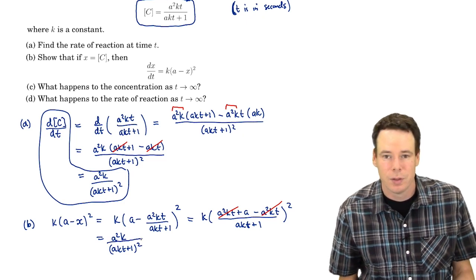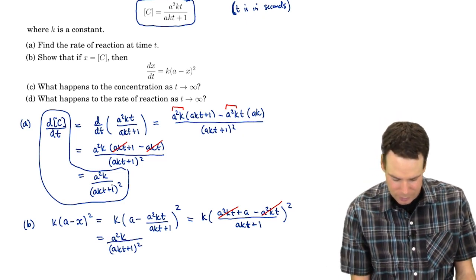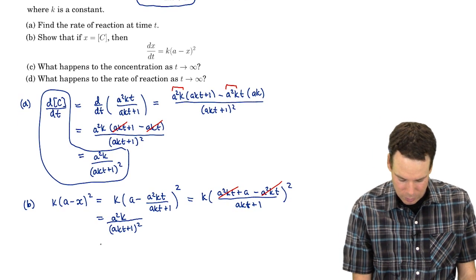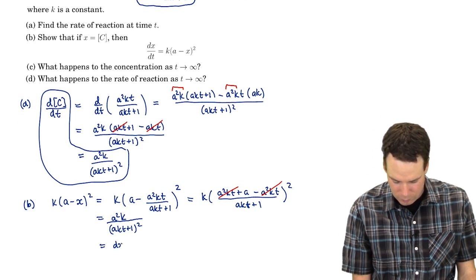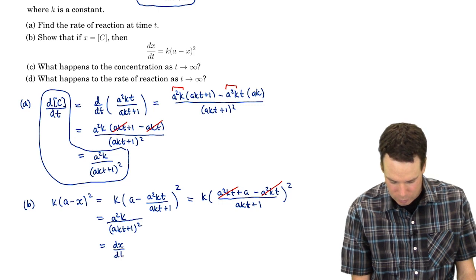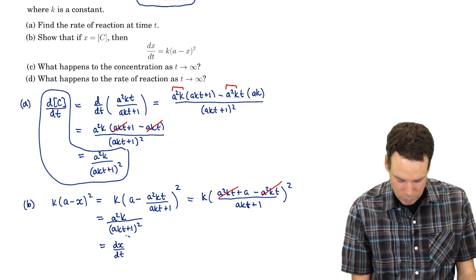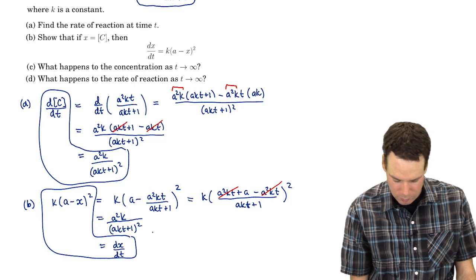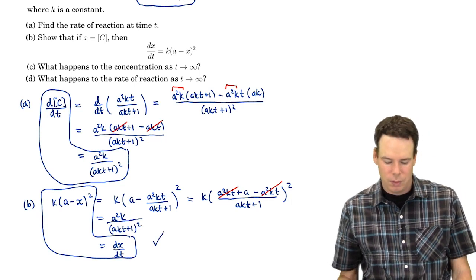I get some cancellations happening here. And so what we get is an a squared k on top and an akt plus 1 all squared on the bottom. Does that look familiar? Oh yeah, that is exactly our rate of reaction. That's our derivative of x with respect to t. And so there we go. We have verified what we wanted to verify.